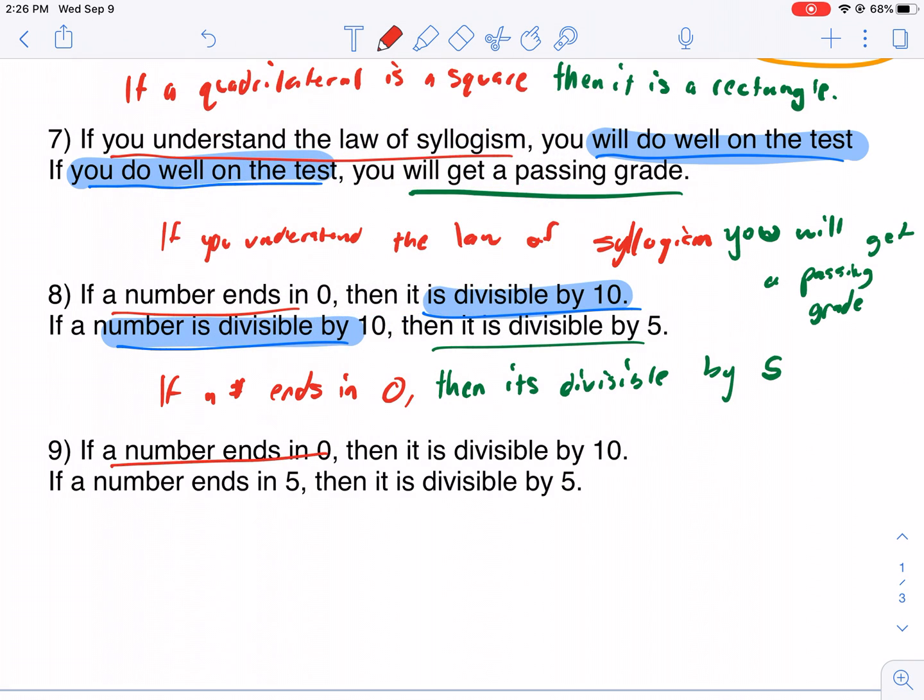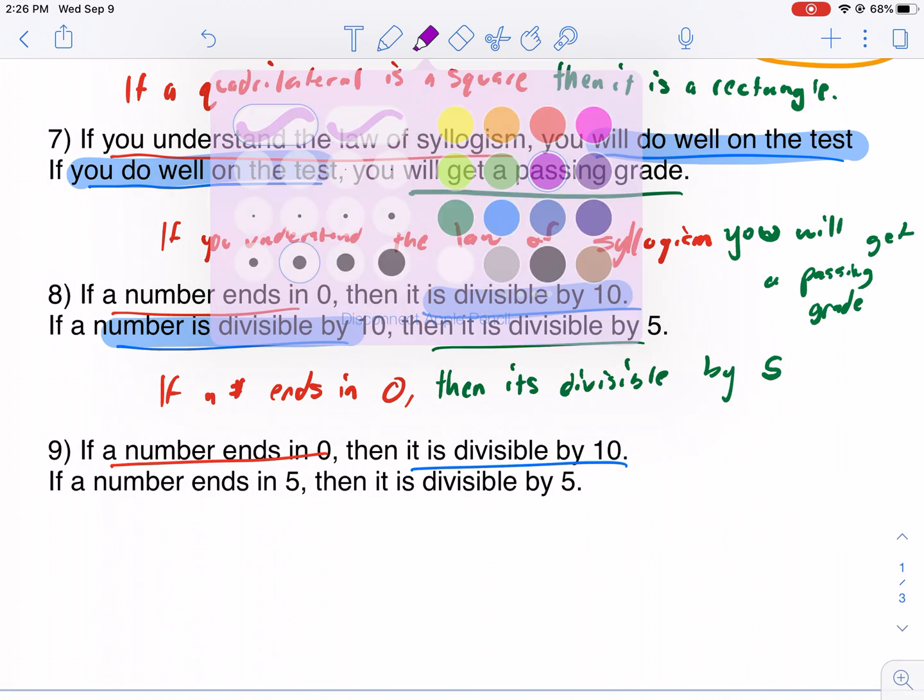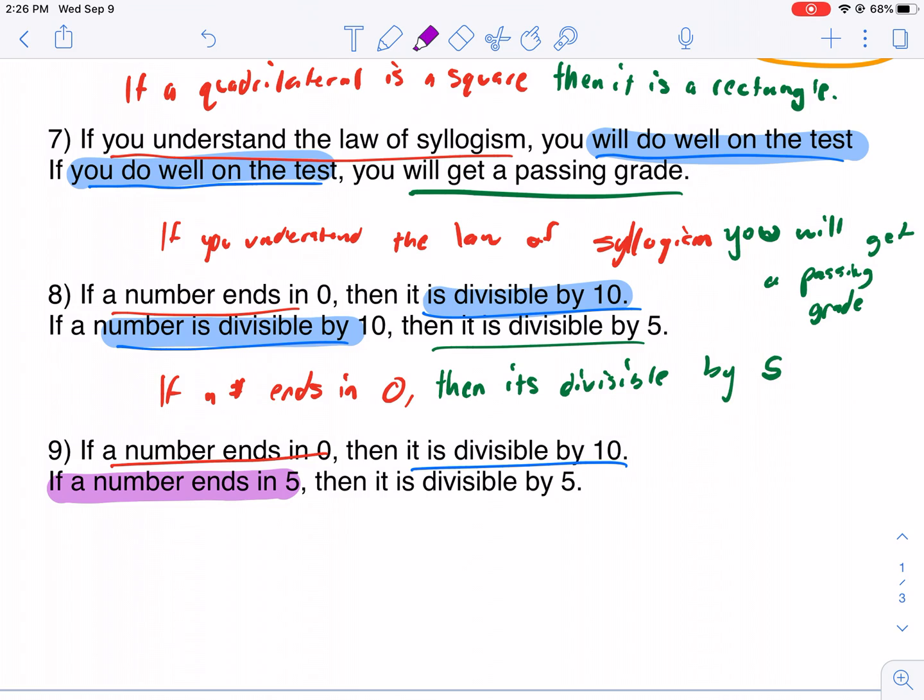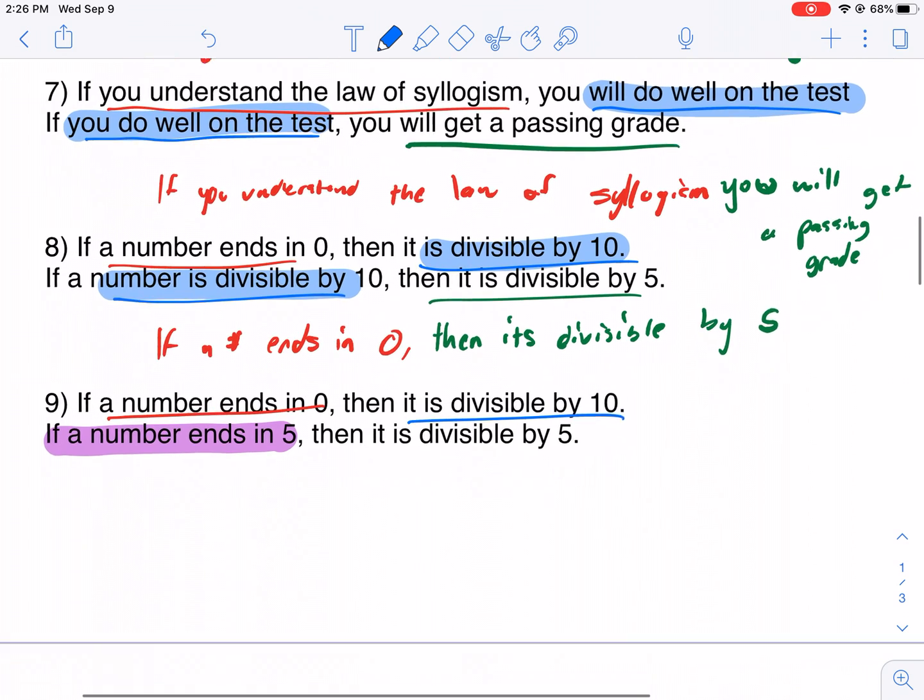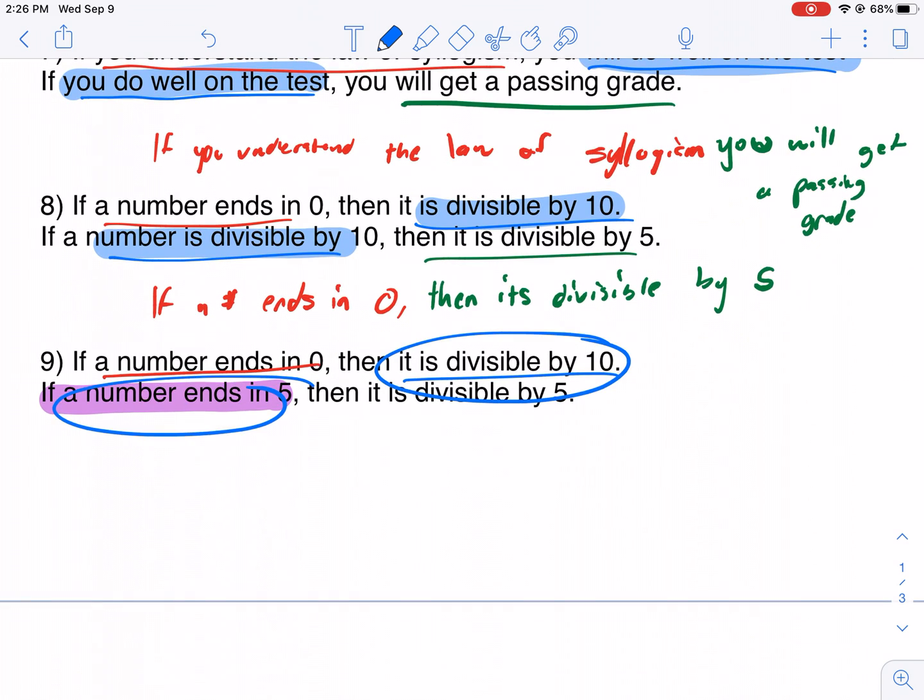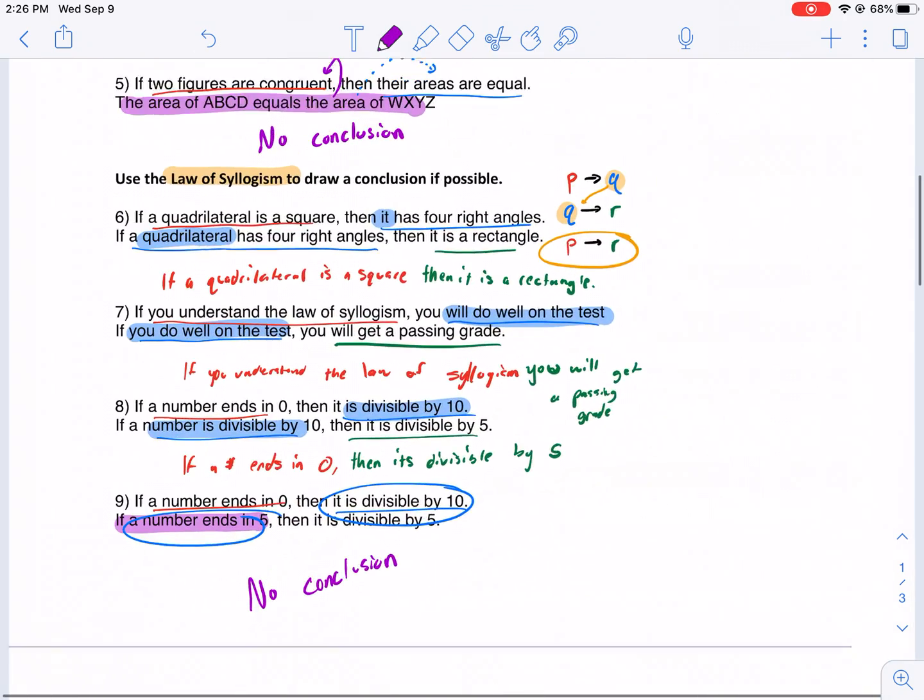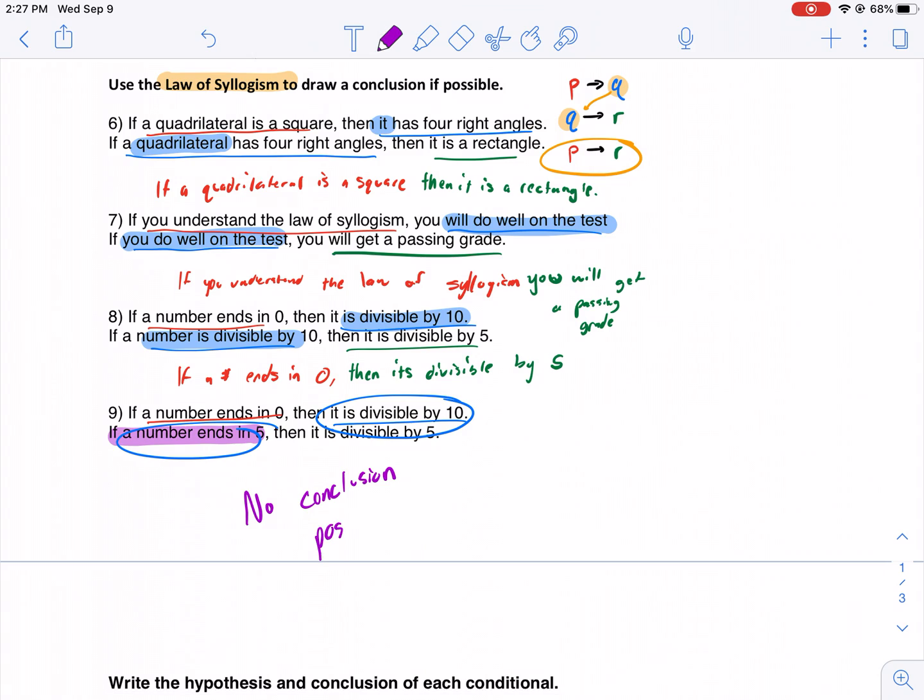On to the last one. A number ends in zero, then it's divisible by 10. If a number ends in 5, now we have something else. Look, we have a new guy on the scene. A number ends in 5. This does not match. So we can't just connect these two things. Even though it's true, this is a bad setup. Even though numbers that end in zero are divisible by 5, this is a bad setup. These need to match. The conclusion of one needs to match the hypothesis. So we're going to say no conclusion. No conclusion possible.